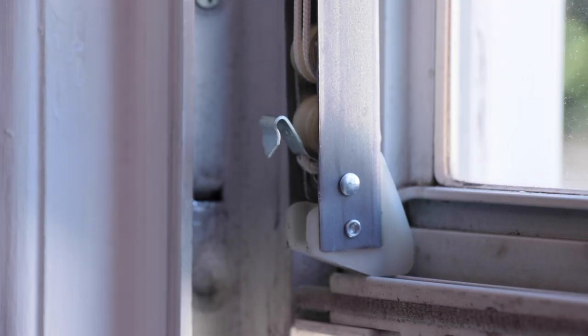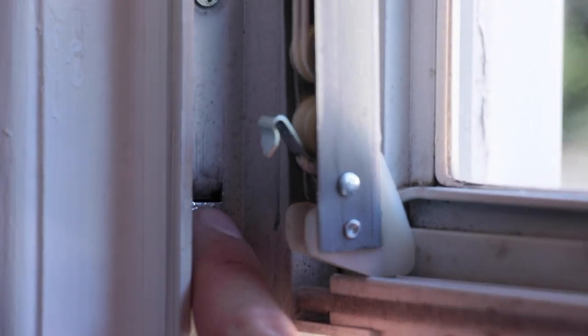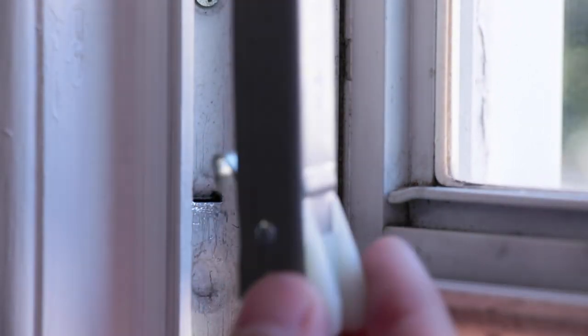The hook is located at the bottom of the channel balance. This will hook into the small slot inside your window jam and hold the tension of the channel balance.